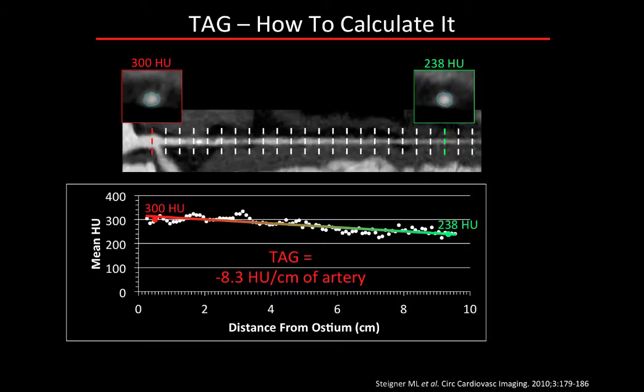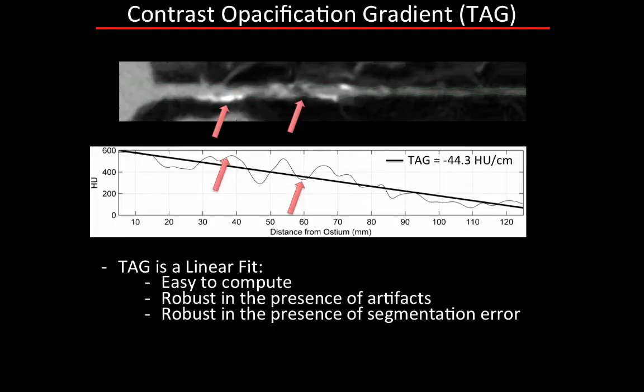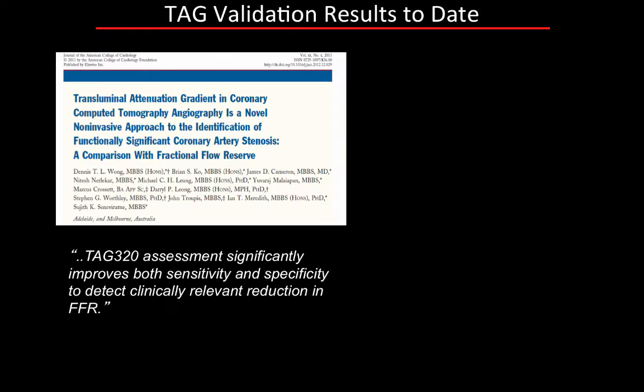In this example, say minus 8.3 Hounsfield units per centimeter of artery—meaning that if the proximal value is 300 Hounsfield units and you go 10 centimeters further down the artery, you expect to find about 217 Hounsfield units in the lumen. One of the nice things about the TAG is that because it is a linear fit of a very dense dataset, it is easy to compute and also very robust in the presence of artifacts such as beam hardening due to calcium or errors in segmentation.